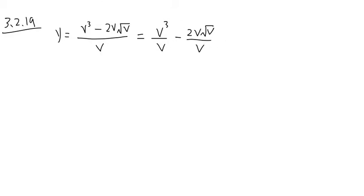If we do it this way, here on the first part we can simplify. So φ to the third power over φ, I can cancel one of the φ's, so it will be just φ to the second power.